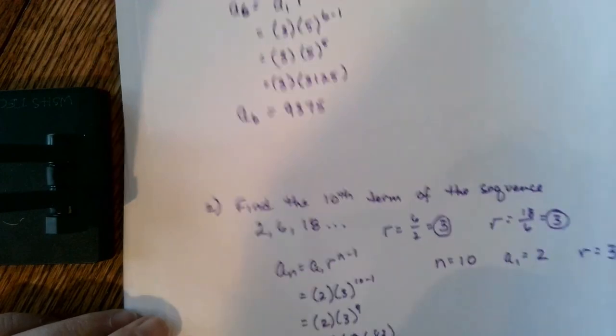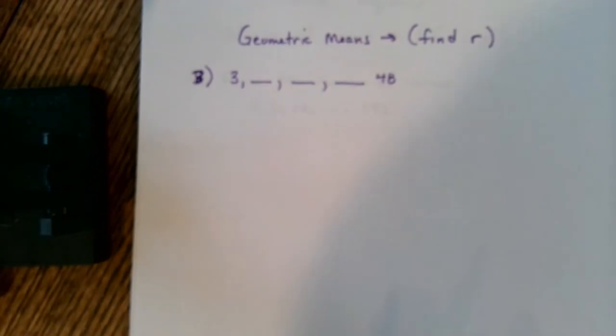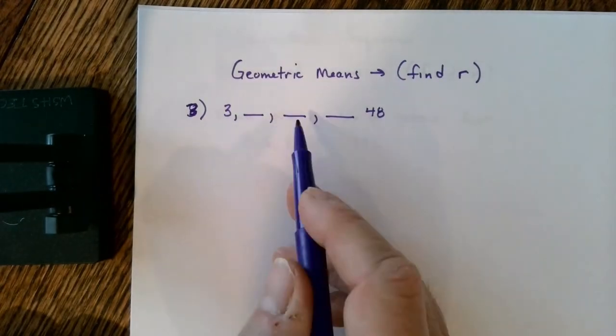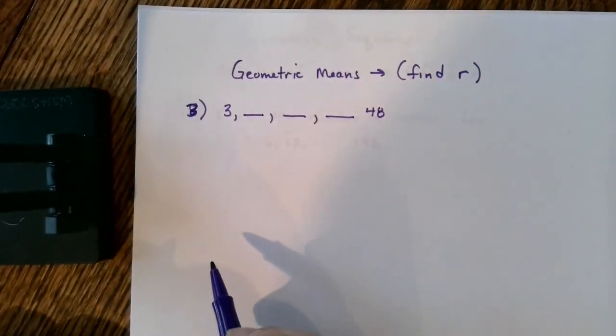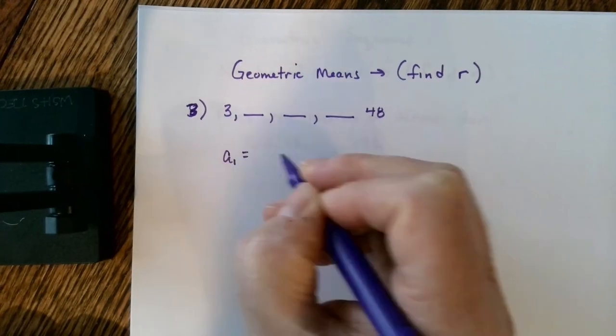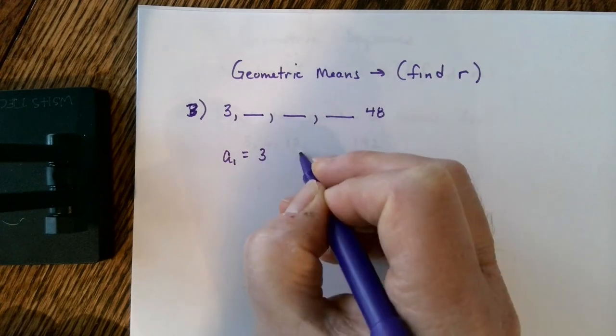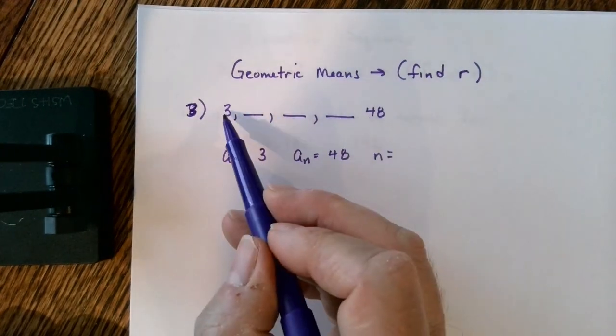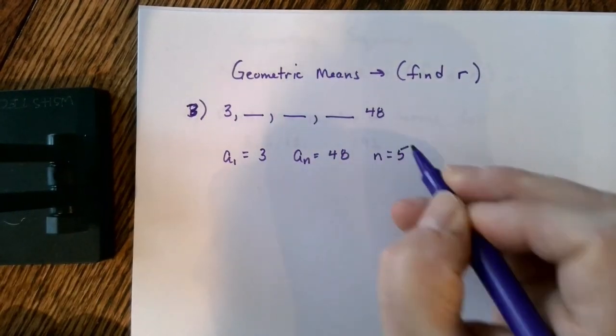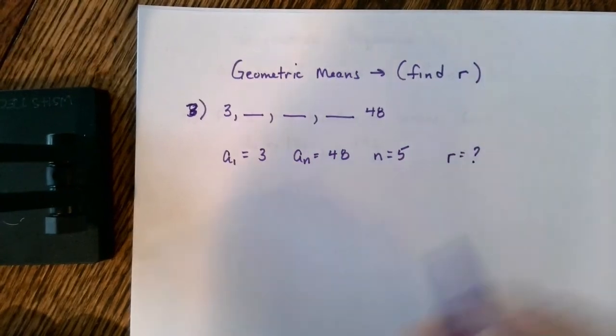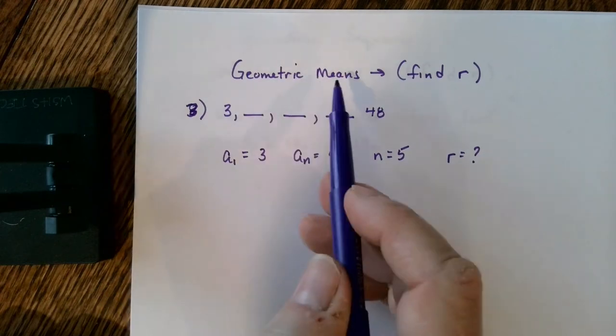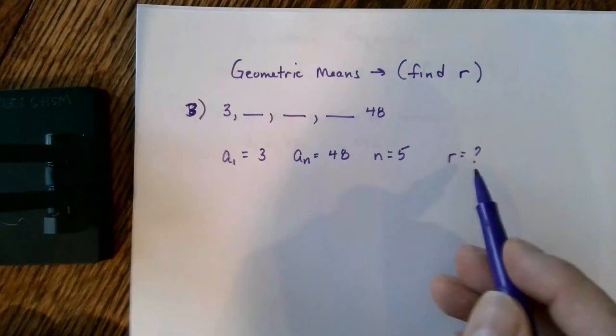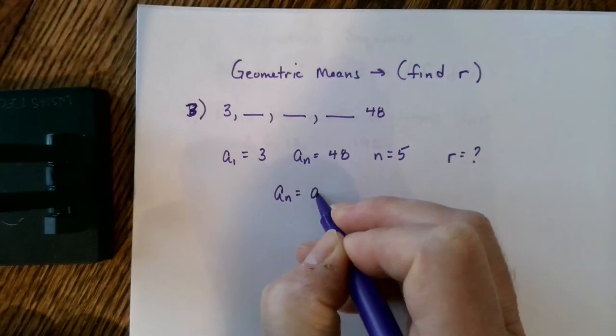We can also use our formula to find missing values in our sequence. For example, we have values that are missing between the 3 and the 48. I can easily identify that my first term is 3. My last term is 48. And the question is, how many terms do I have? Well, if I count including the blanks, 1, 2, 3, 4, 5, I have 5 terms. But as you can see, what I'm missing is my R. I don't know what the common ratio is. If you're asked to find geometric means for a geometric sequence, that usually means you need to calculate your R value or your common ratio. Notice that I have everything else that I need in the formula. And so I'm ready to proceed.